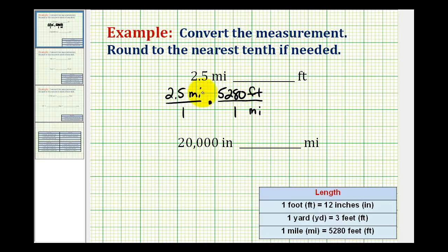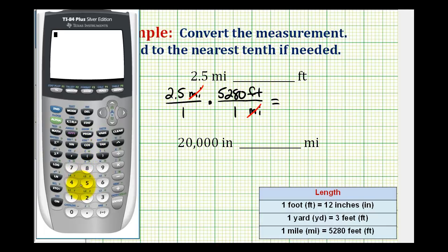Notice how the units of miles will simplify out, leaving us with feet. This product will give us the number of feet in 2.5 miles. So we have 13,200 feet.